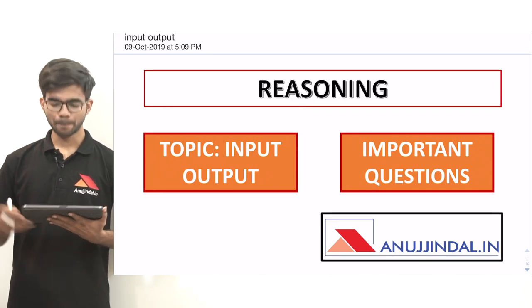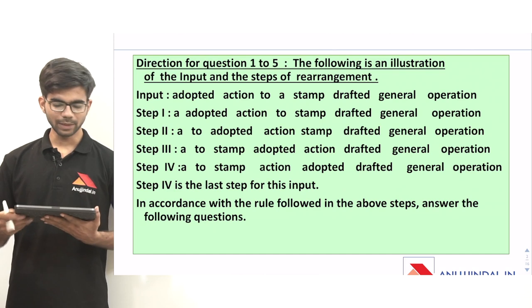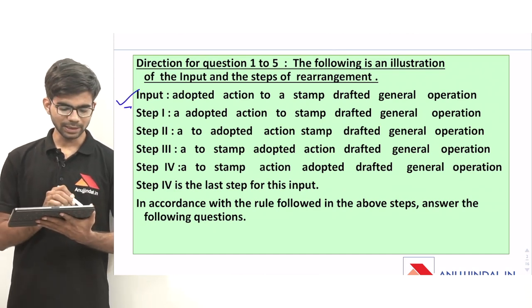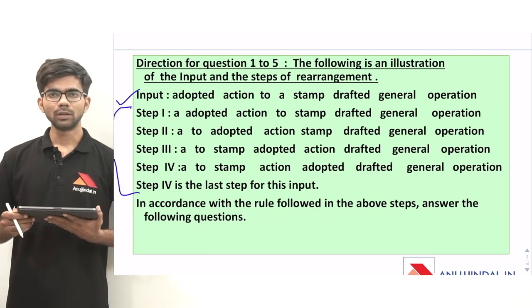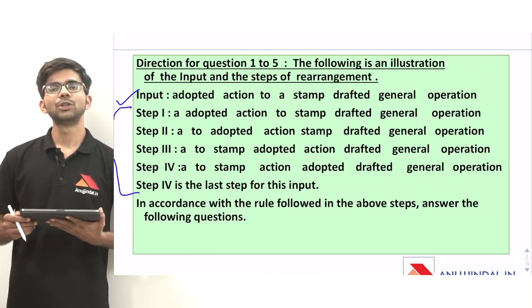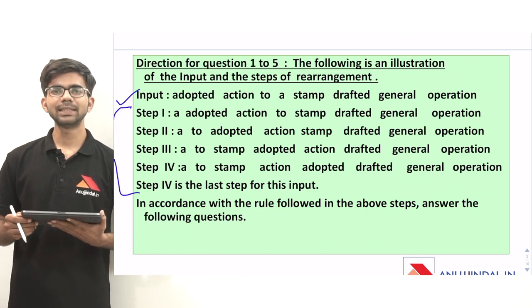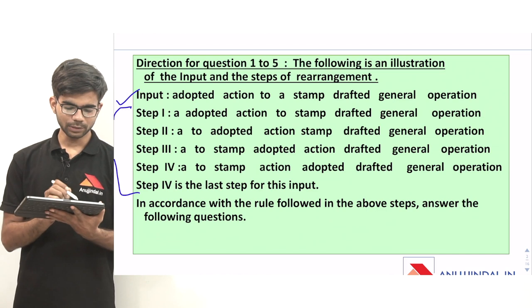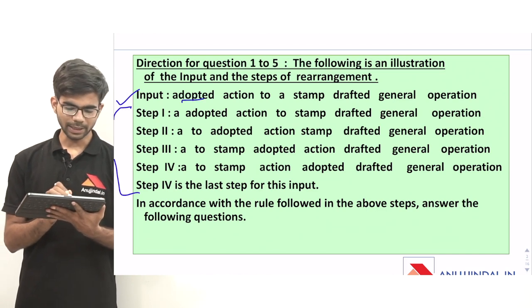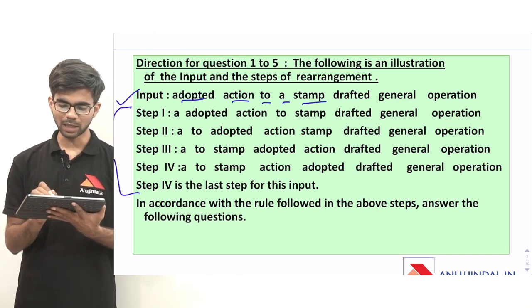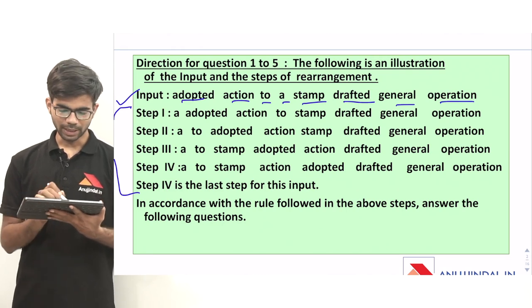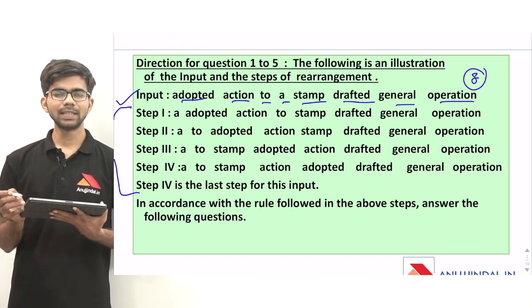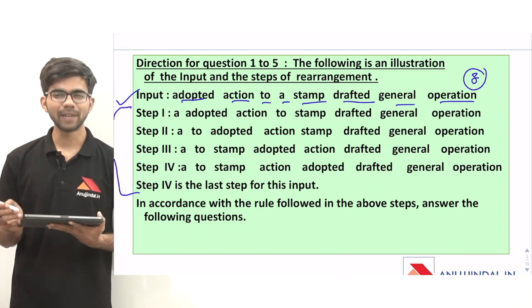So without wasting any time let's begin. In these types of questions you are given an input statement and then you are given some statements regarding the output. Your job is to identify the logic behind the steps which are being followed. Let us see the input. The input is: adopted, action, to, a, stamp, drafted, general, operation. There are 8 terms in total. Let us see the steps so that we can identify the logic.